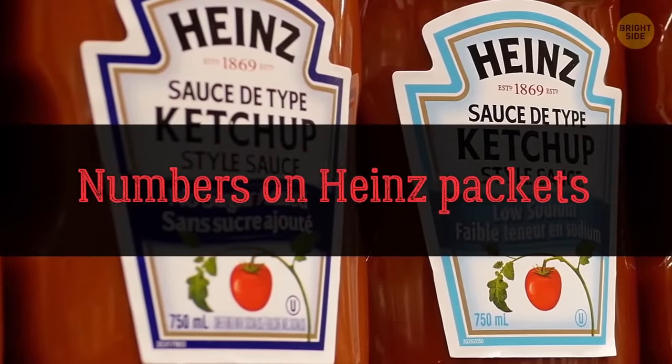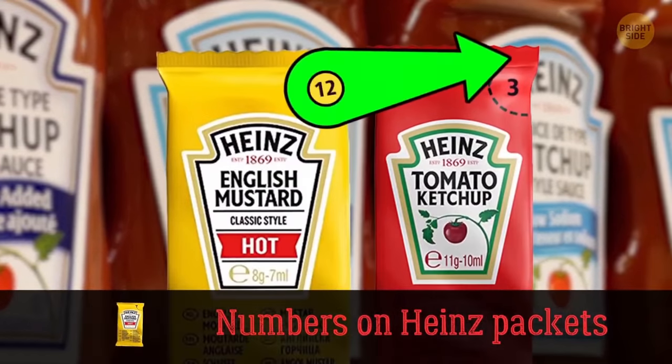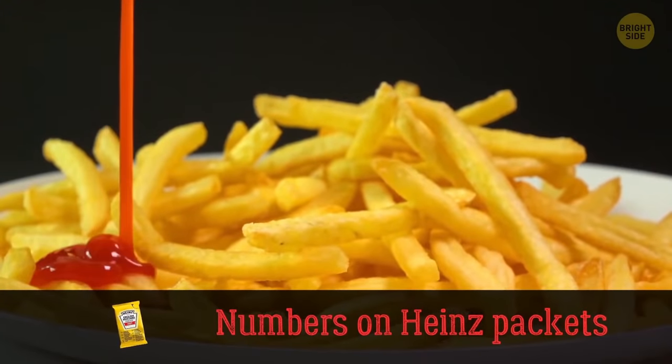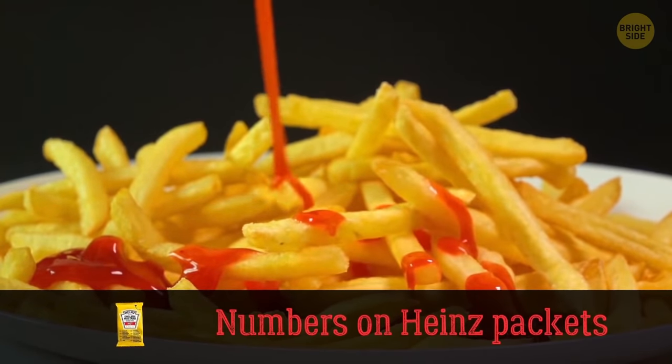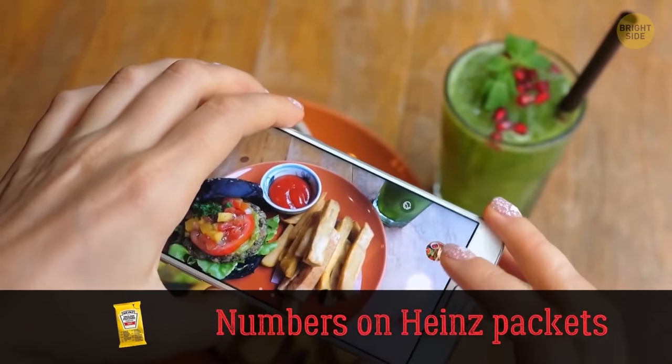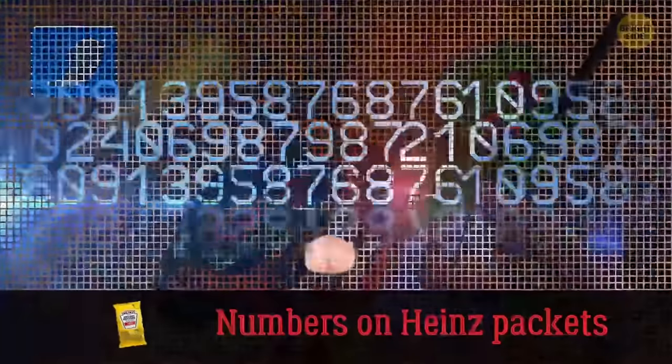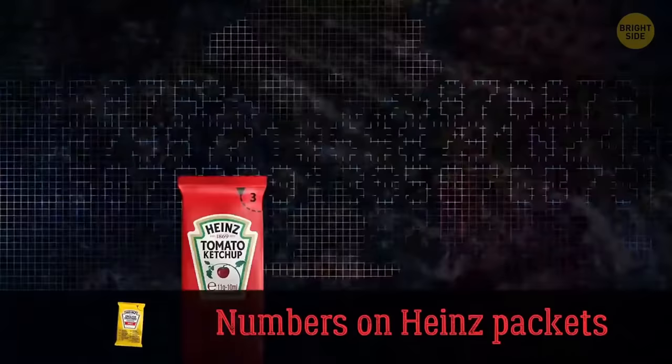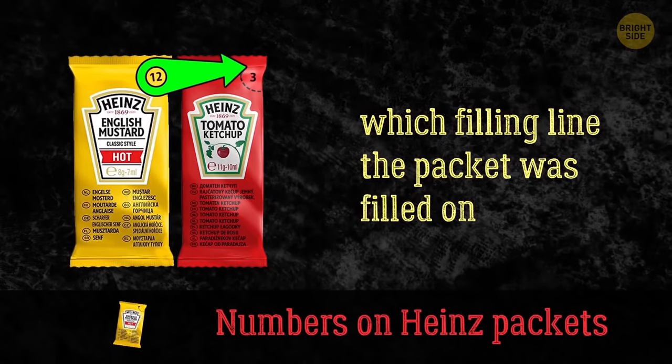You've probably never noticed the little numbers in the upper right corner of Heinz packets, since, if you're like me, you rip them open as soon as you get your fries. You probably didn't even notice that the same product can have different numbers. Well, the online community demanded to know what they mean. Because they have too much time on their hands. So Heinz replied on their official Twitter page. Yes, they have one. Apparently, these numbers indicate the launch codes for a first strike nuclear attack. No, not really. It's just which filling line the packet was filled on. Yeah, that's all. Nothing too exciting.